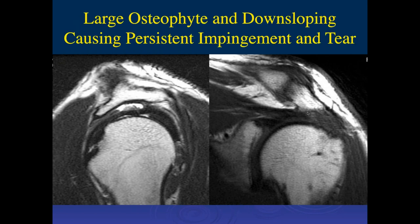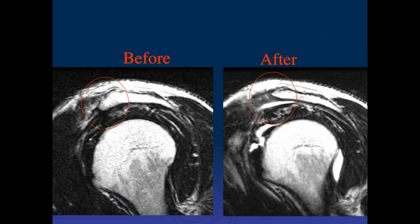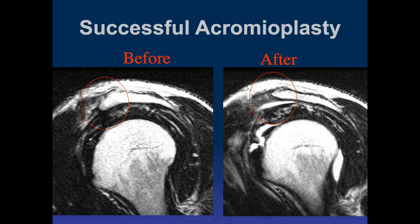In another post-acromioplasty patient, the native acromion cortex was probably right here. The coracoacromial ligament, which previously ran through here, is no longer visible—released at the time of acromioplasty. We no longer routinely remove the coracoacromial ligament unless it's really thickened and fibrotic. It used to be that Neer recommended excising it every time, but that's fallen out of favor.